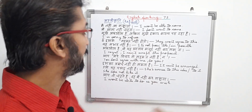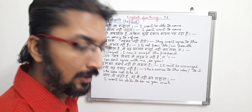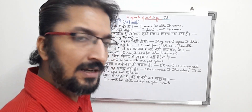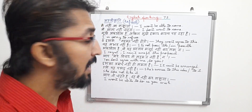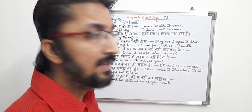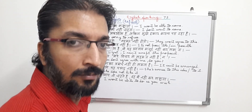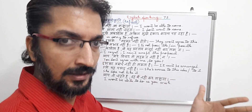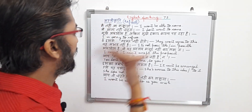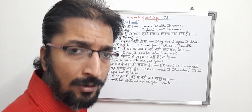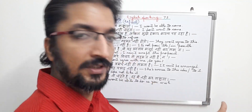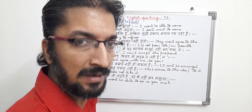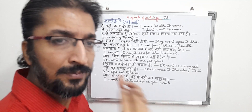In English, it means: I won't be able to come. The person is clearly refusing — saying he won't be able to come to that place. So he's clearly refusing to go somewhere. This is a refusal type sentence.